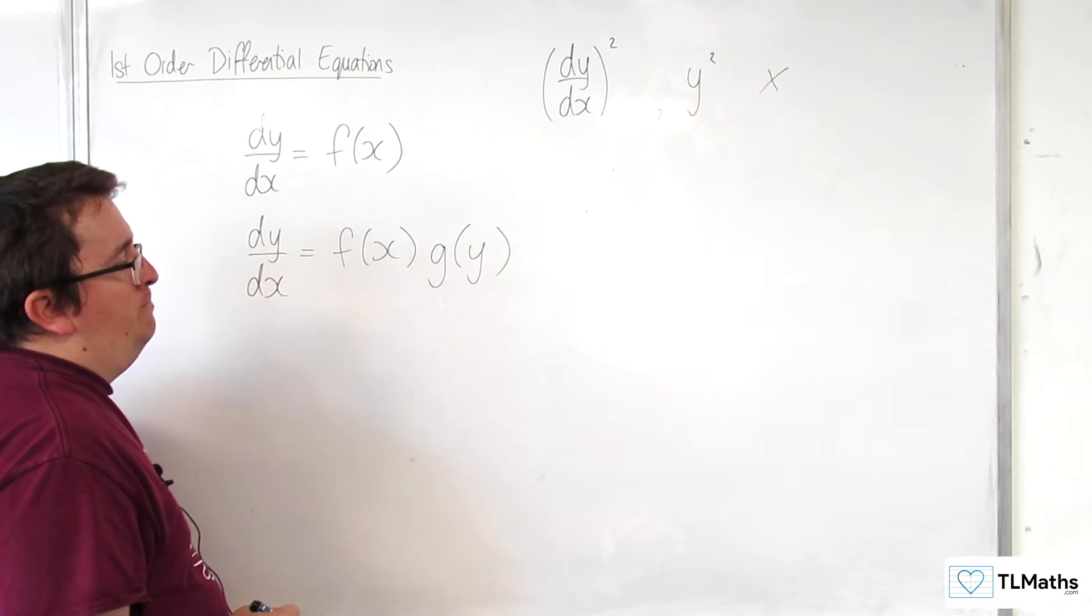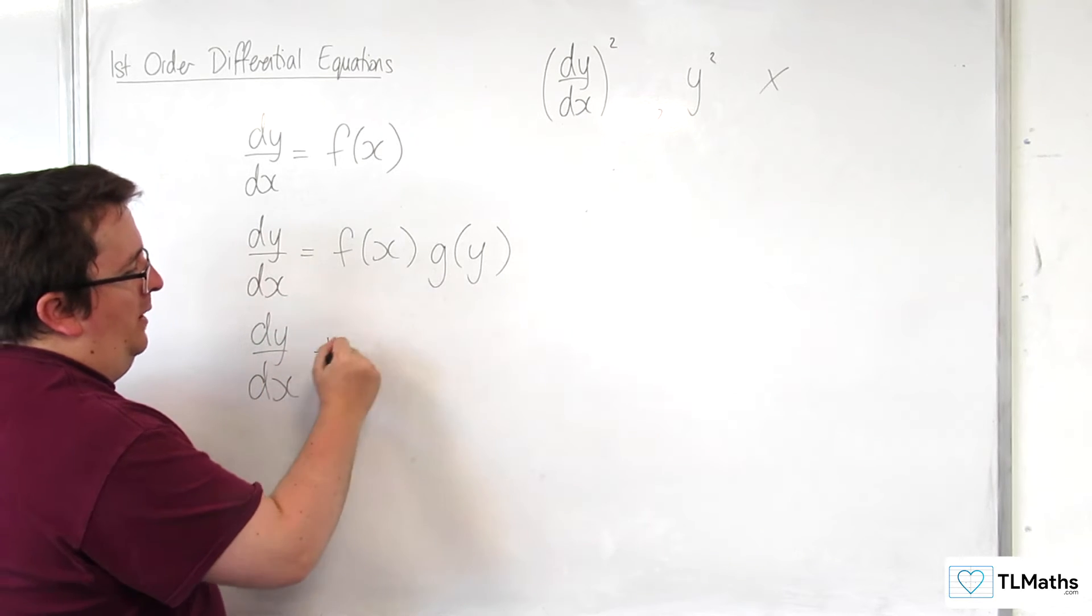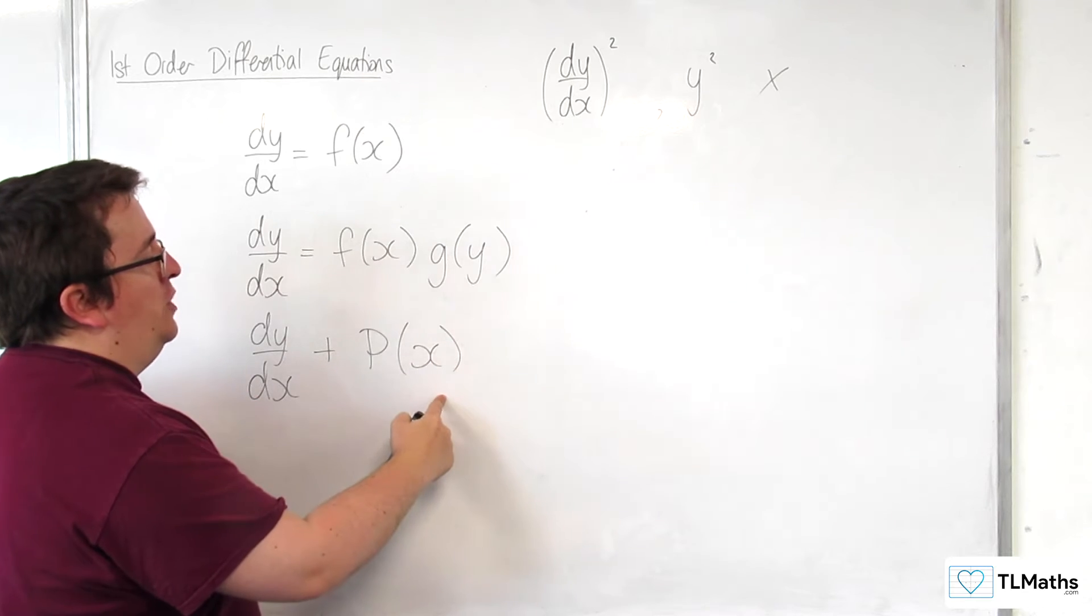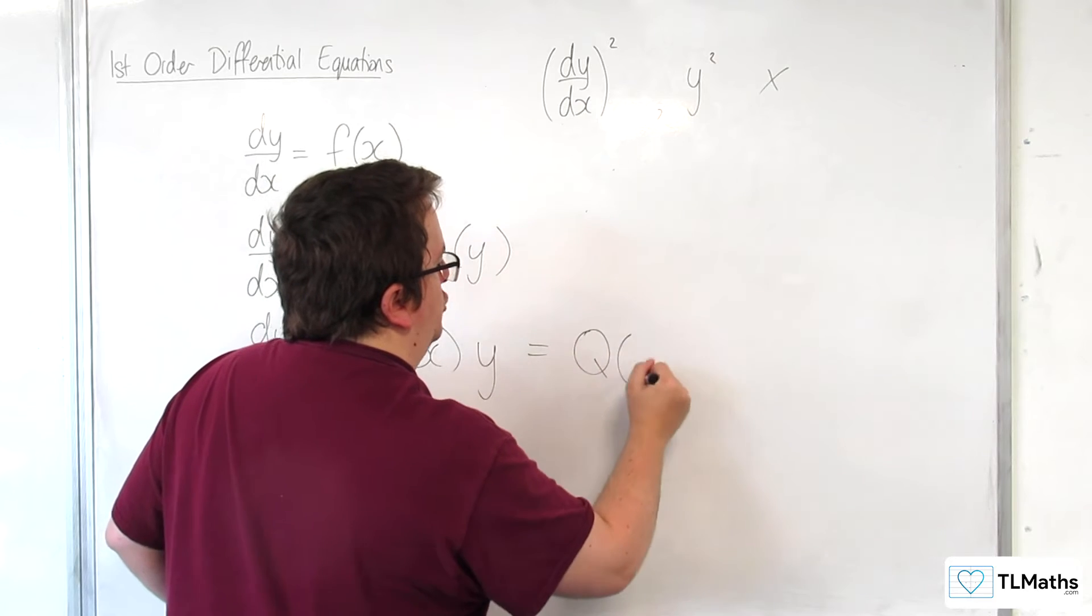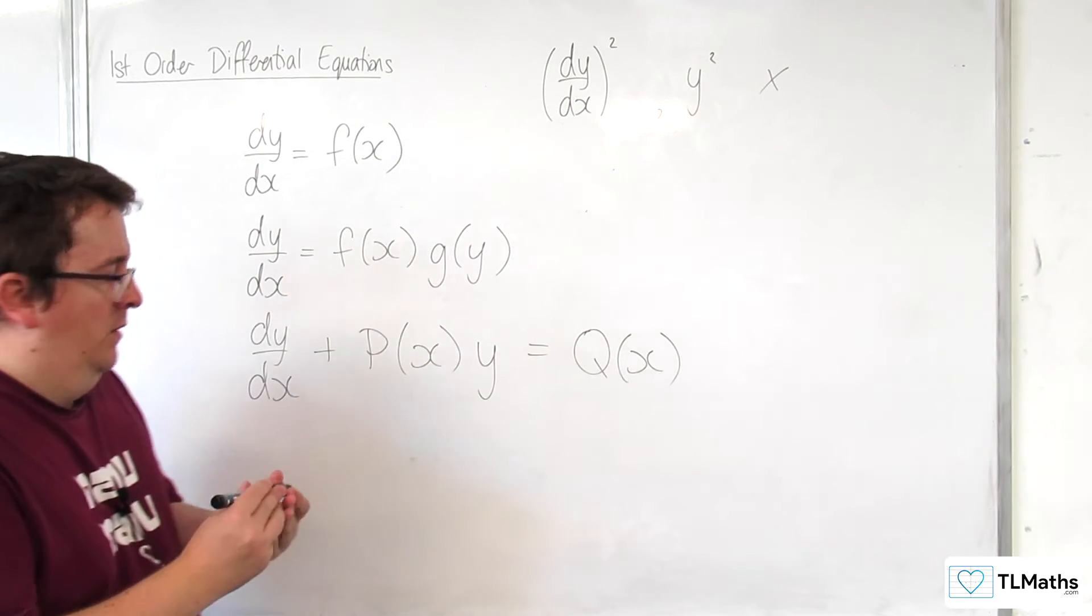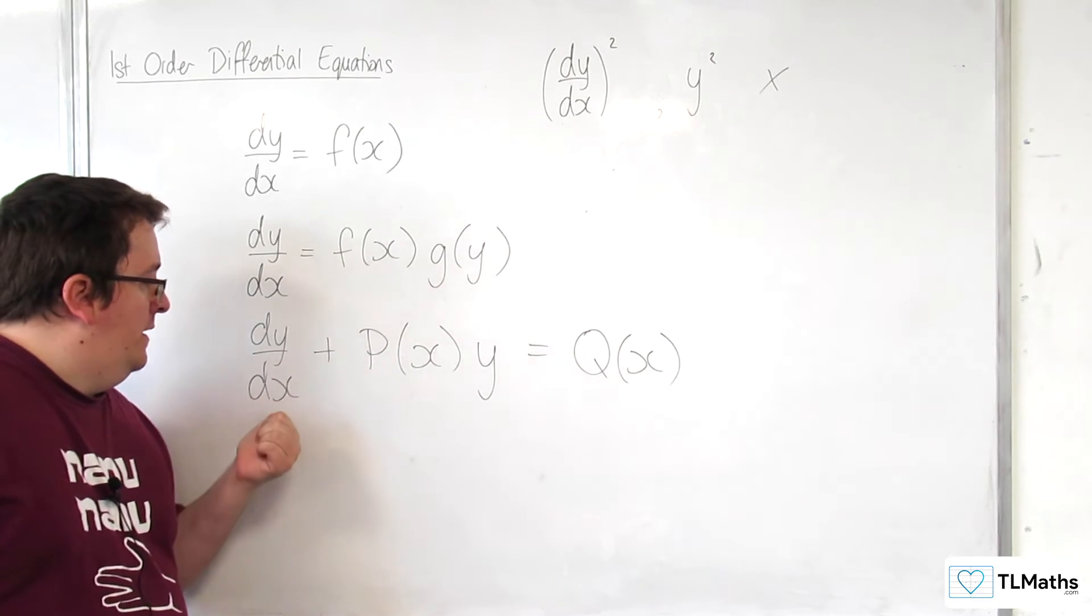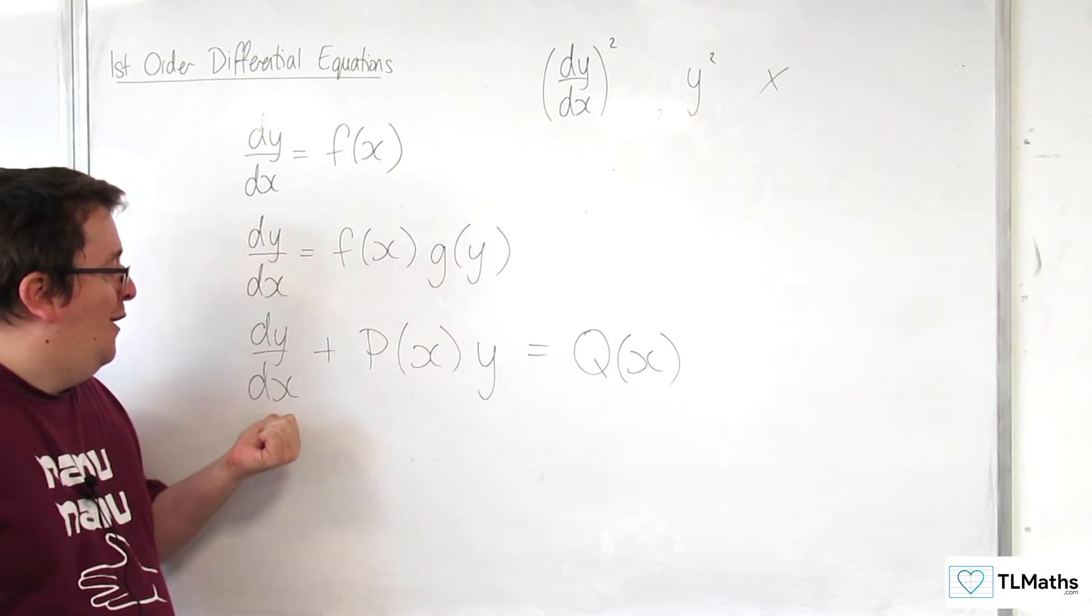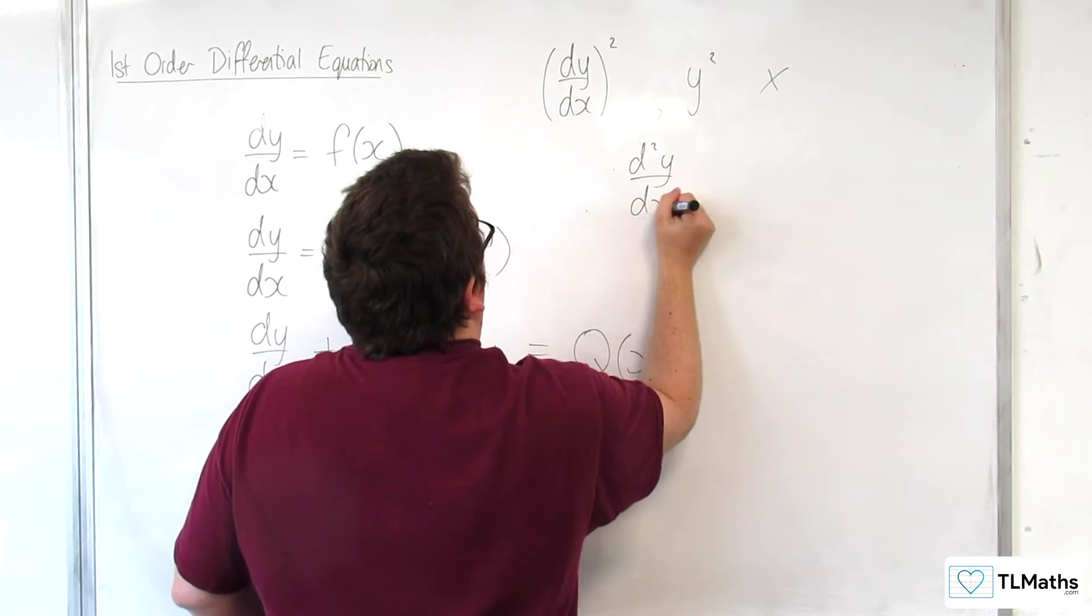Which can be written in the form of dy by dx plus, this is how they're generally written, some function of x times y is equal to some other function of x. So, this is a first-order differential equation because the highest derivative that you have in here is 1, dy by dx. There's no d2y by dx squared involved.